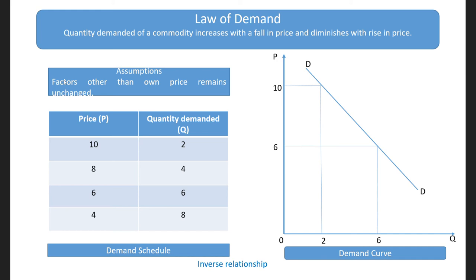Suppose the commodity we are discussing is tea. Now if you do not like tea but rather like coffee, when the price of tea falls, you need not always increase your demand. Because you do not like tea, if your taste has changed — earlier you used to consume tea but now you do not like it anymore — even if the price of tea is falling, quantity demanded of tea may not increase. So these things impact our law of demand.